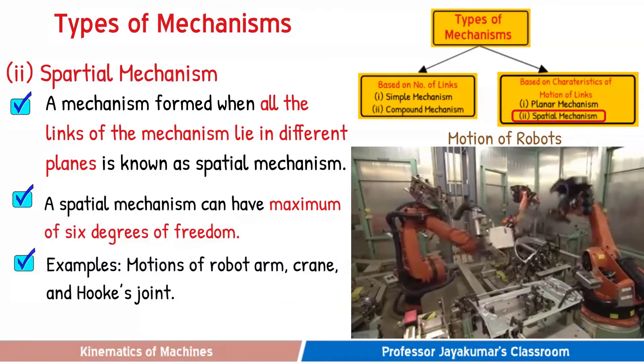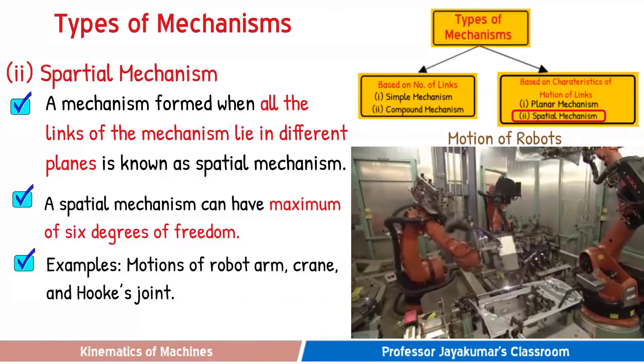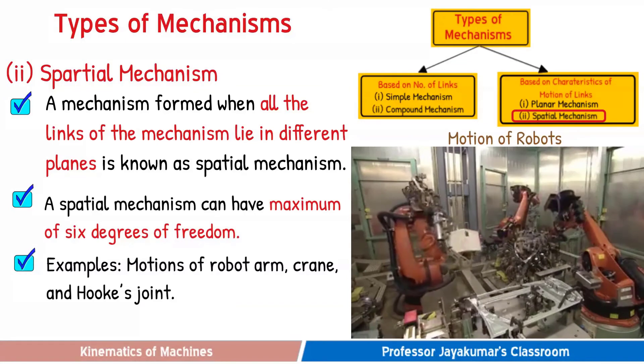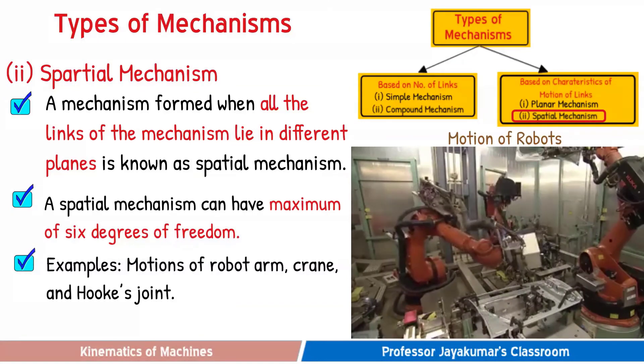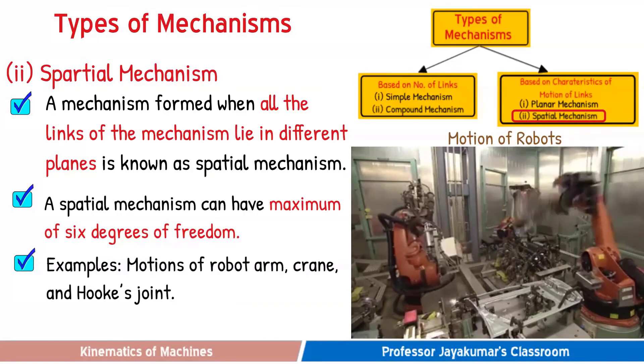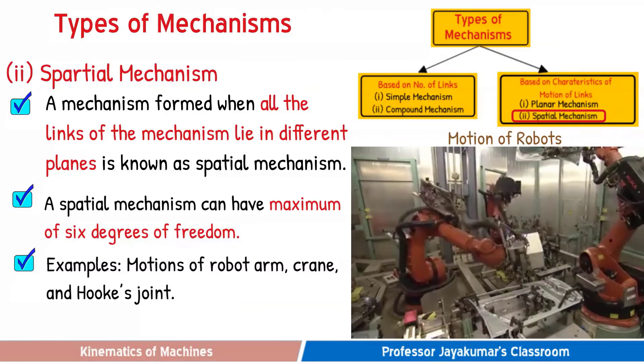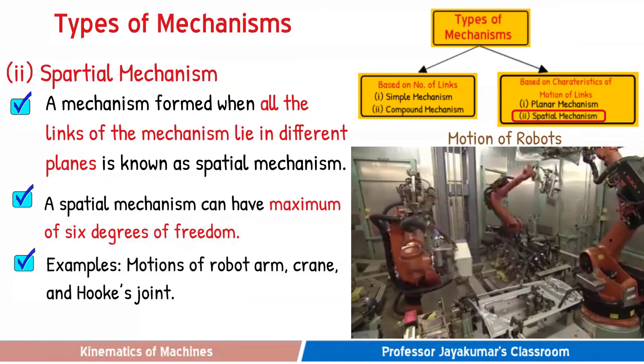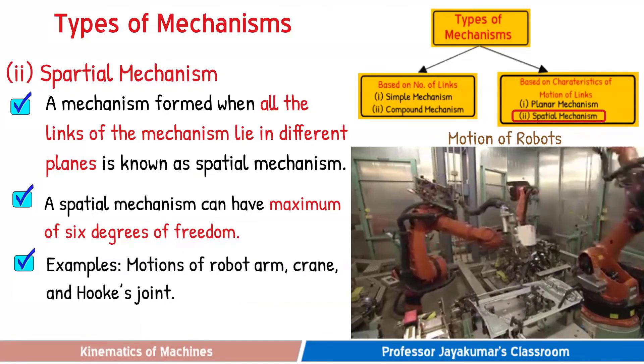Consider the motion of a robot arm. This requires more than one plane to define the motion of the robot arm. Hence, motion of the robot arm forms a spatial mechanism.